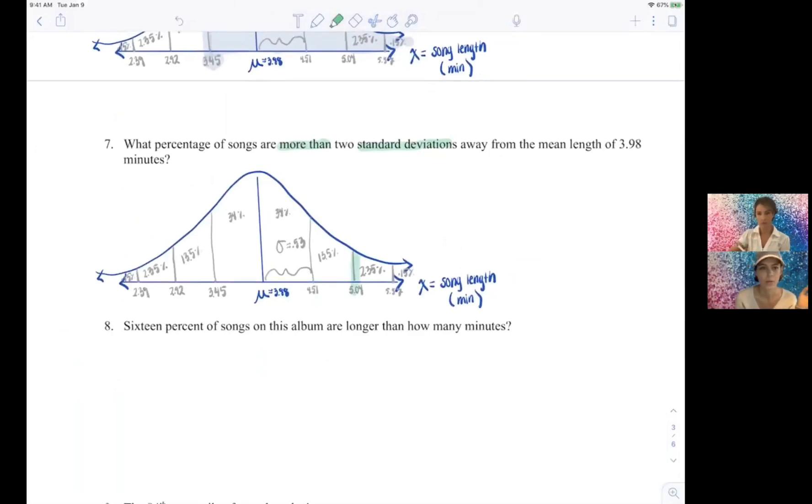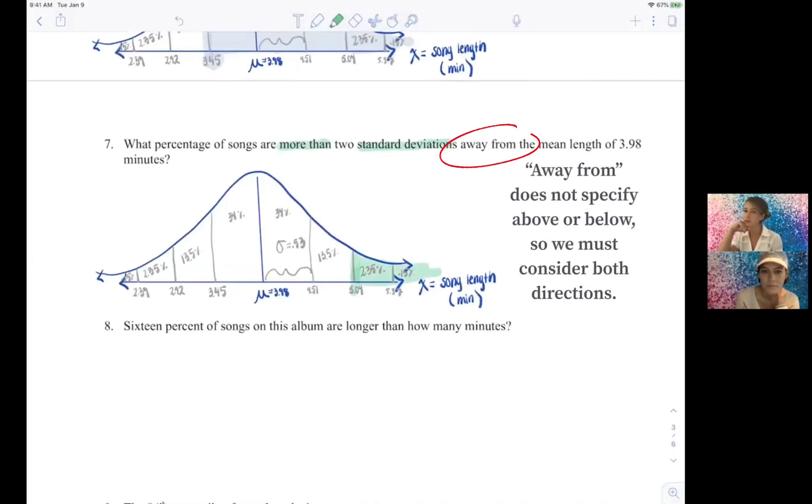So two standard deviations away on the right. And if we're going, we want to know what, we want to know what percentage of songs are more than that. So we're going to shade to the right, okay. But could you be two standard deviations away to the left? Two, yeah, yeah, we could go because a lot of people will forget because they see them more than, so it's very tempting to shade to the right.